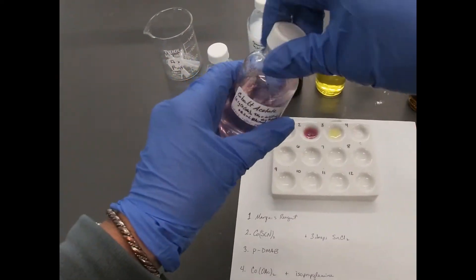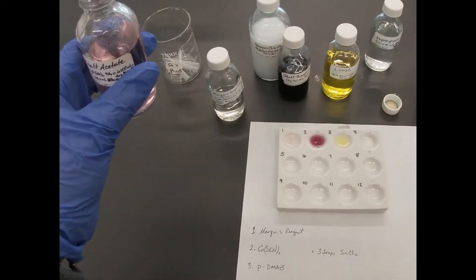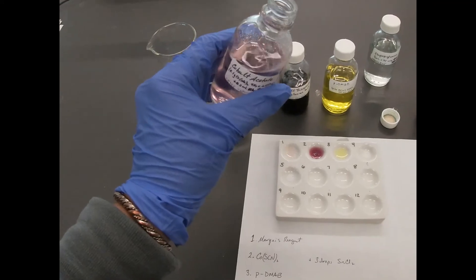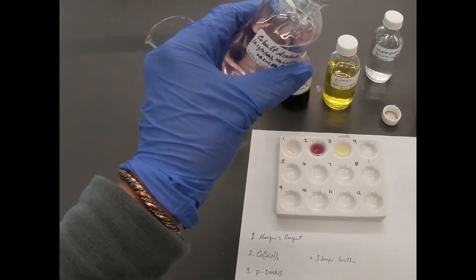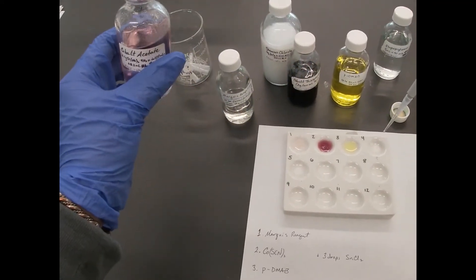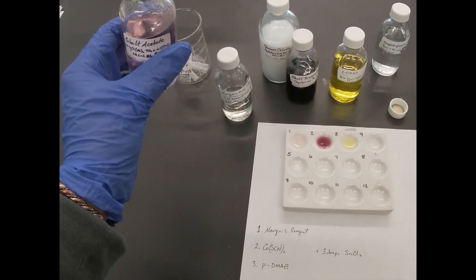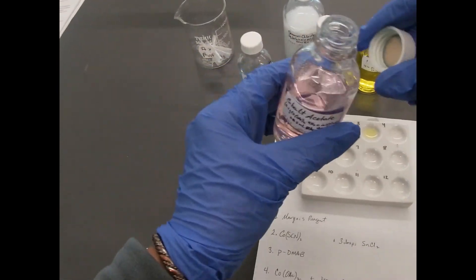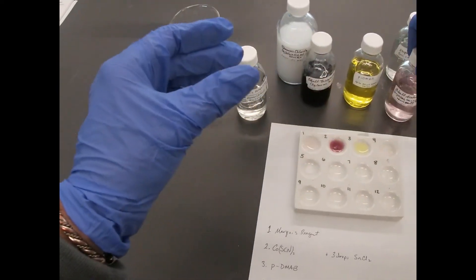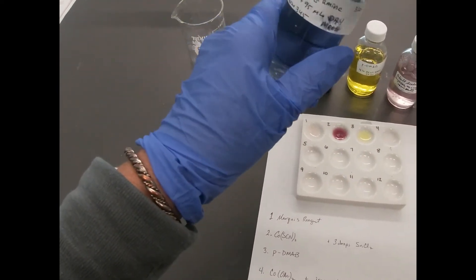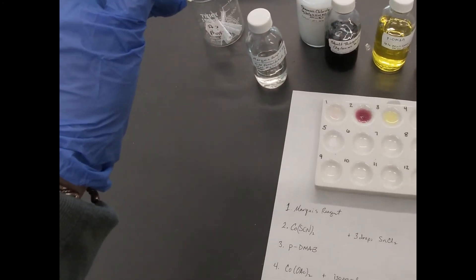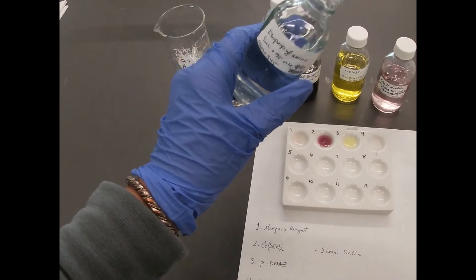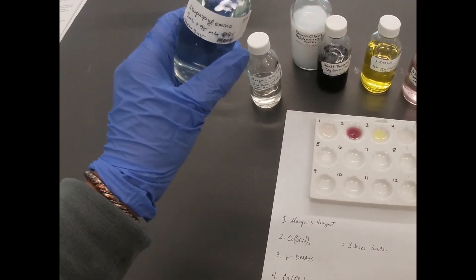And our cobalt acetate, which although we know it's supposed to indicate barbiturates, we didn't have much luck when we actually had barbiturates, known barbiturates in our samples. So we've got our cobalt acetate and our isopropylamine.